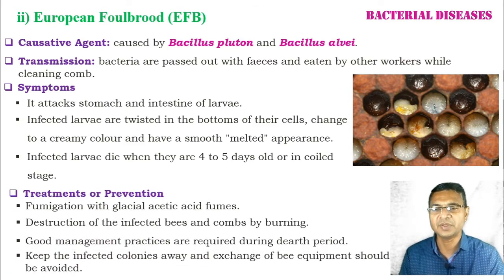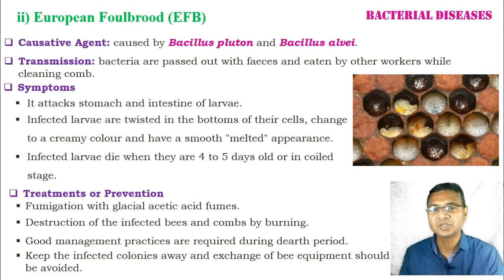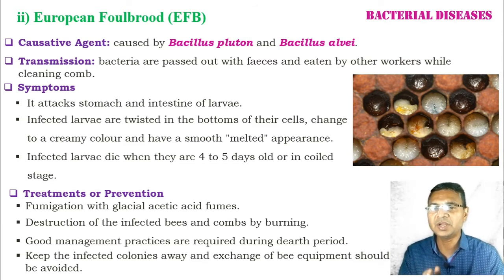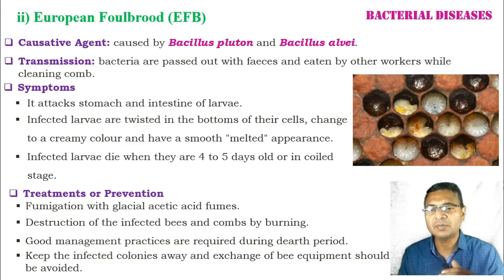For treatment or prevention of European Foulbrood: fumigation with glacial acetic acid is very effective. When infection is high, destruction and burning of the infected bees and combs is necessary. Good management practices are also effective during the dearth period or unfavorable conditions. Infected colonies must be placed away from healthy colonies, and beekeepers should avoid exchanging beekeeping equipment when handling colonies.